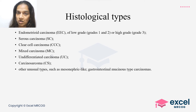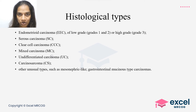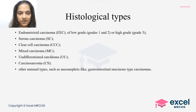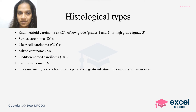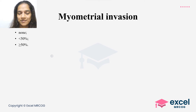The histological type of the tumor is also important, as staging requires classifying the tumor into aggressive and non-aggressive types. Non-aggressive types include endometrioid carcinoma grade 1 and grade 2 — these are the low-grade ones. Endometrioid carcinoma grade 3 is aggressive. Other aggressive tumors include serous carcinoma, clear cell carcinoma, mixed carcinoma, undifferentiated carcinoma, and other unusual types such as mesonephric-like and gastrointestinal-type mucinous tumors. The histological type is confirmed via endometrial biopsy.